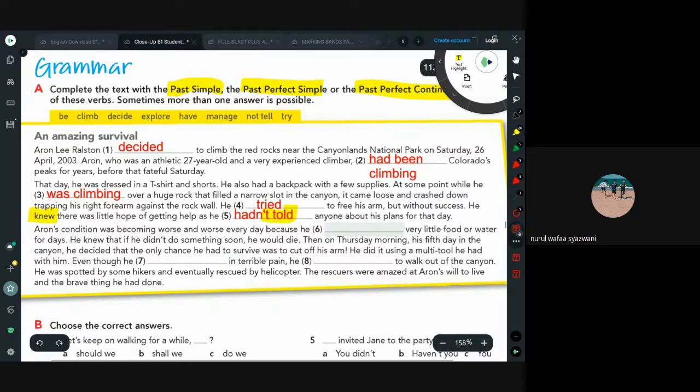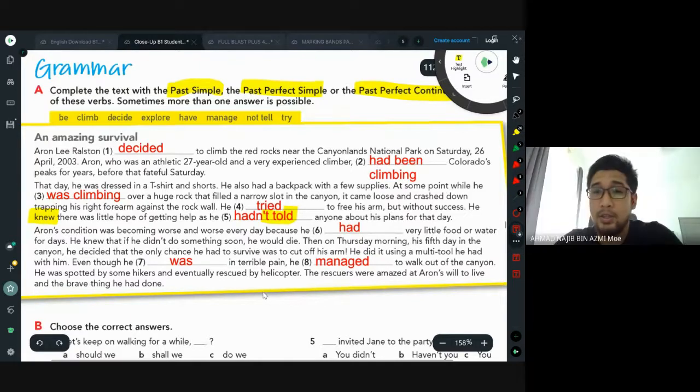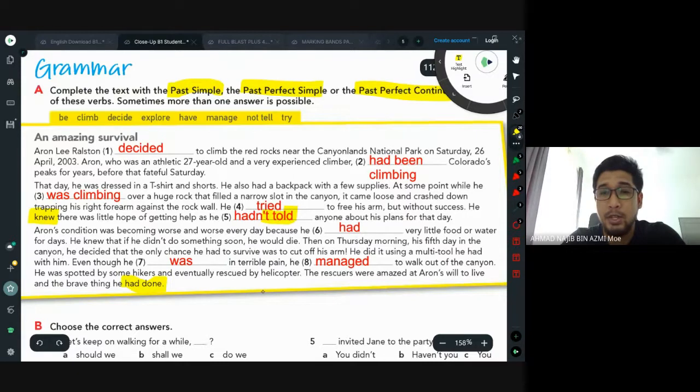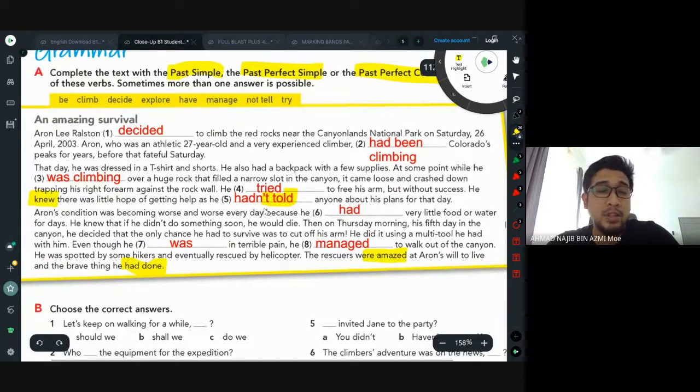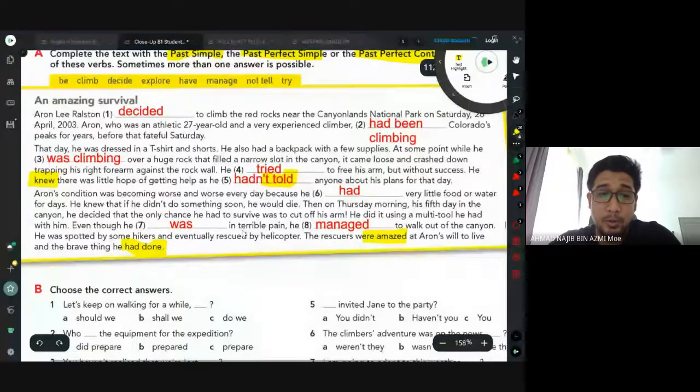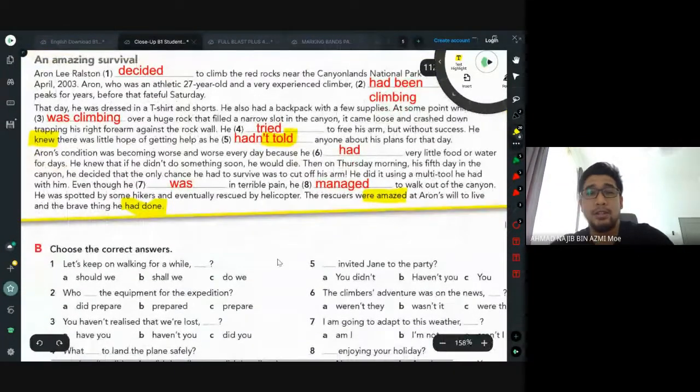Aaron's condition was becoming worse and worse every day because he had very little food or water. For days he knew that if he didn't do something soon he would die. Then on Thursday morning, his fifth day in the canyon, he decided that the only chance he had to survive was to cut off his arm. He did it using a multi-tool he had with him, even though he was in terrible pain. He managed to walk out of the canyon. He was spotted by some hikers and eventually rescued by helicopter. The rescuers were amazed at Aaron's will to live and the brave thing he had done. So here is another example of the past perfect again. Very good, Wafa, you only made one mistake here.